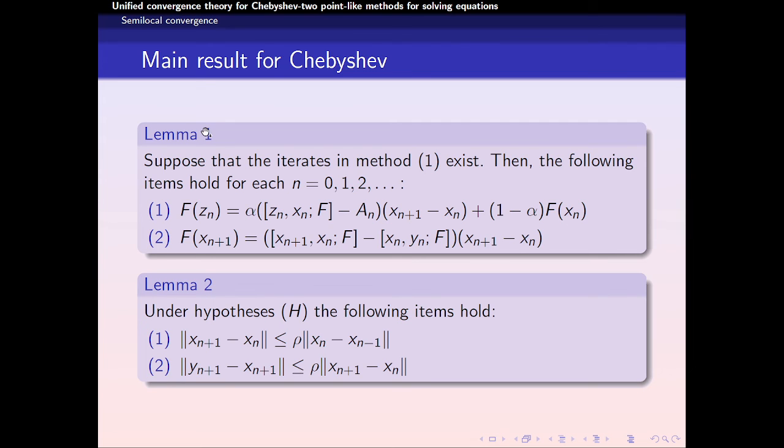Lemma 1 says that suppose that the iterates in method 1 exist, then the following items hold for each n. And lemma 2 says that under the same hypothesis, the following items hold.